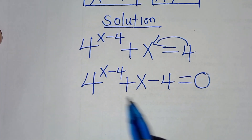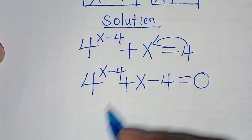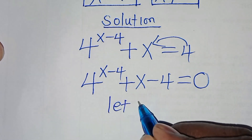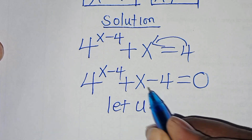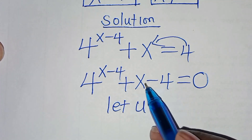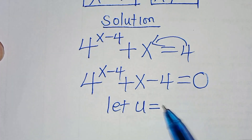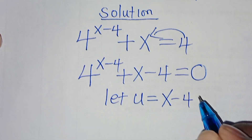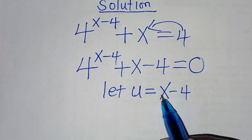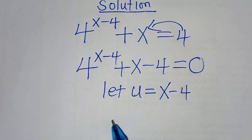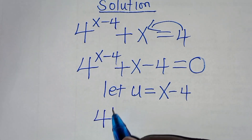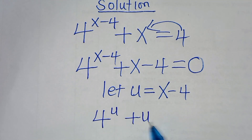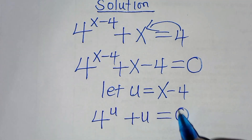The next step is that we can let u be equal to x minus 4. Since x minus 4 is common here, let's substitute u for x minus 4, so that now we have 4 raised to the power of u, plus u, this is equal to 0.